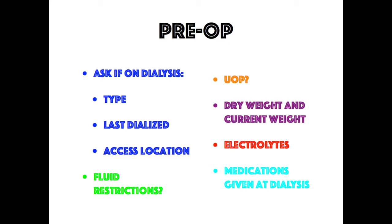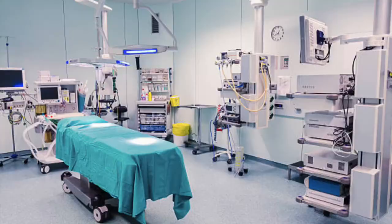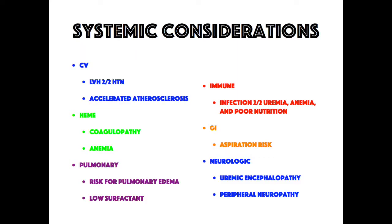There is multi-organ system dysfunction concurrent with renal failure. Cardiovascularly, these patients are at much higher risk for atherosclerosis — accelerated atherosclerosis secondary to disordered glucose and fat metabolism. They're also at risk for CHF, pulmonary hypertension, and arrhythmias, as well as hypertension associated with left ventricular hypertrophy.